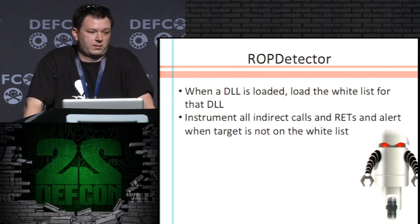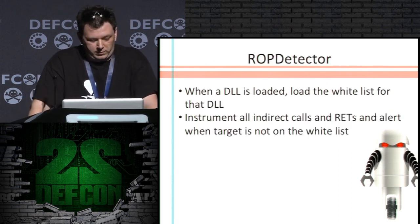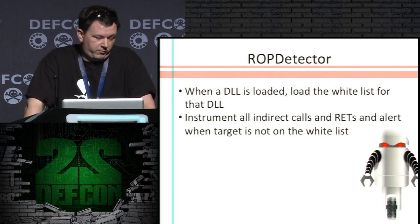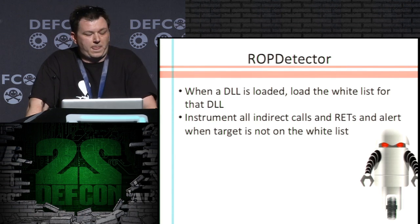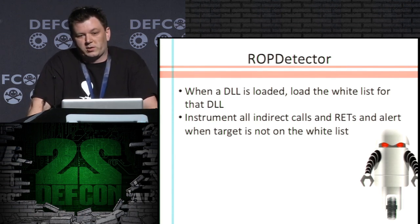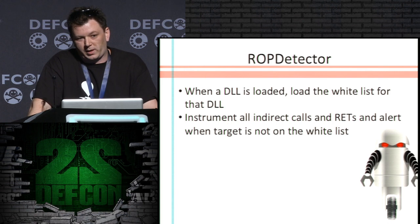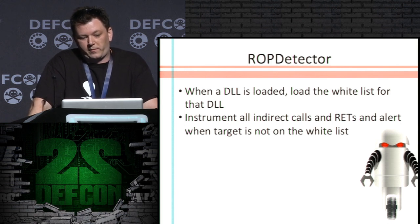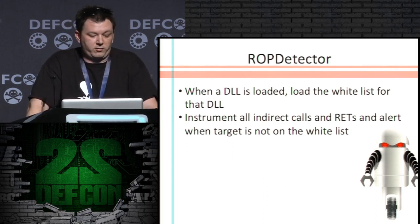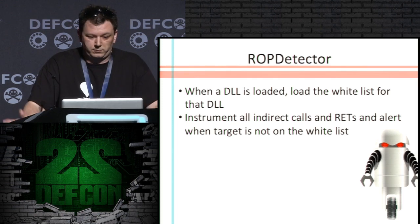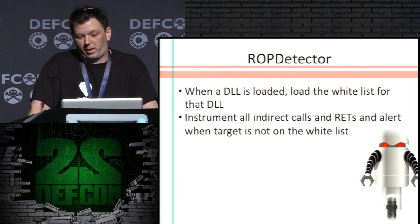Now that we have all this data, let's detect the ROP. We have another PIN tool. When a DLL is loaded, PIN gives you the location of that DLL on disk. I take that location, open up the file, hash it, and then load the whitelist for that. Then I instrument all indirect calls and returns — if you're not on the whitelist, you're flagged as a ROP.